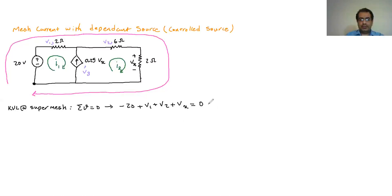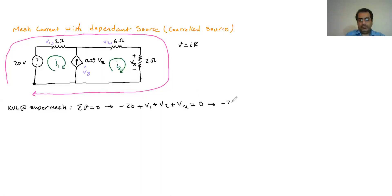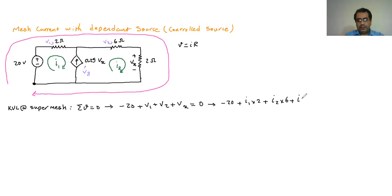I can replace each voltage using V = IR (Ohm's law). So it becomes: −20 + I1×2 + I2×6 + I2×2 = 0. This is the first equation I have, and I cannot write any other equation from a closed loop.